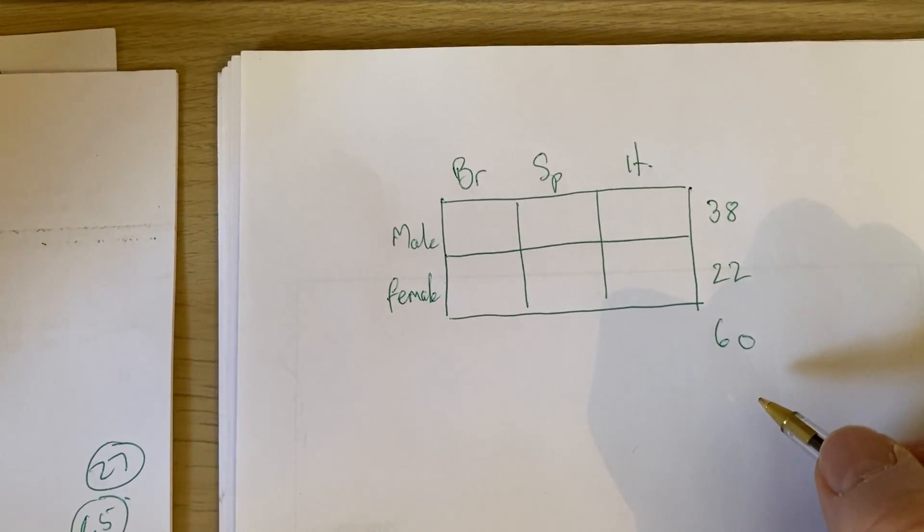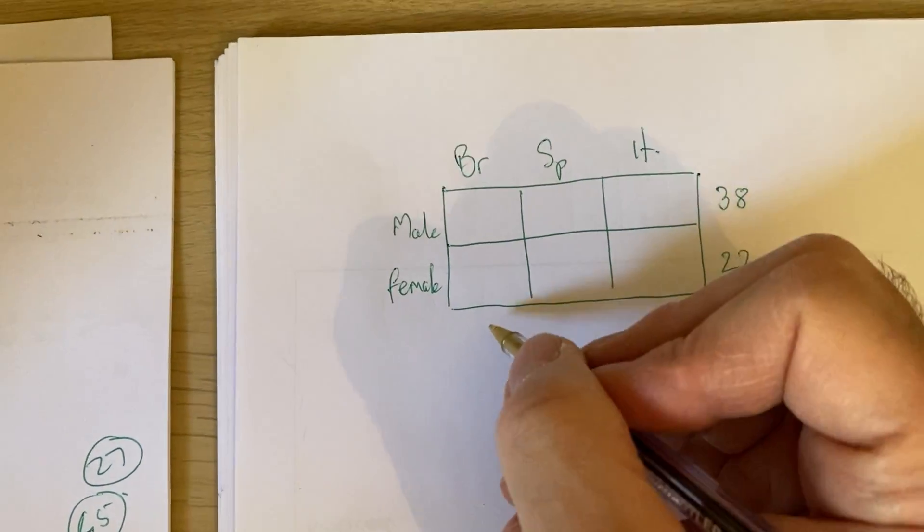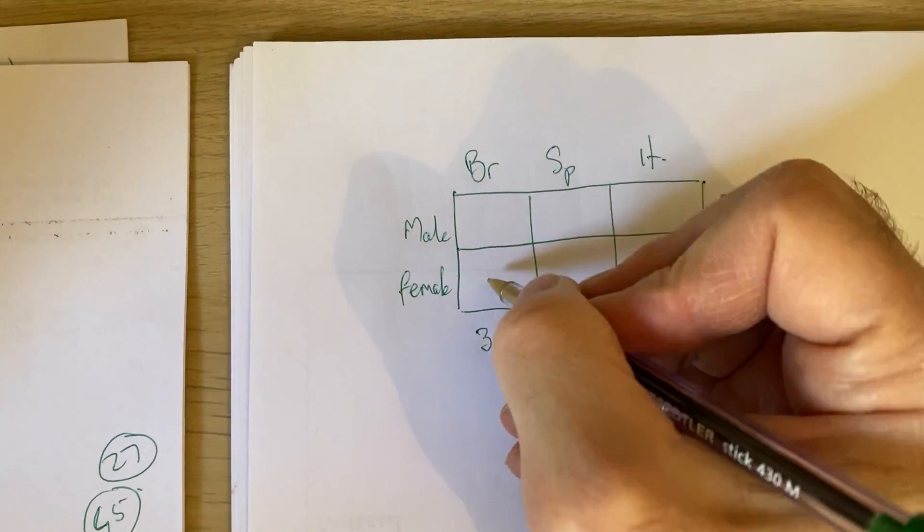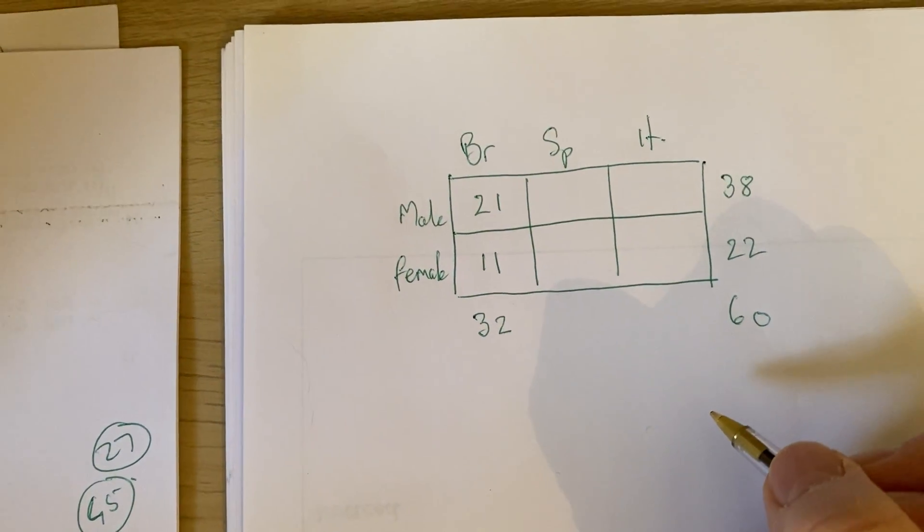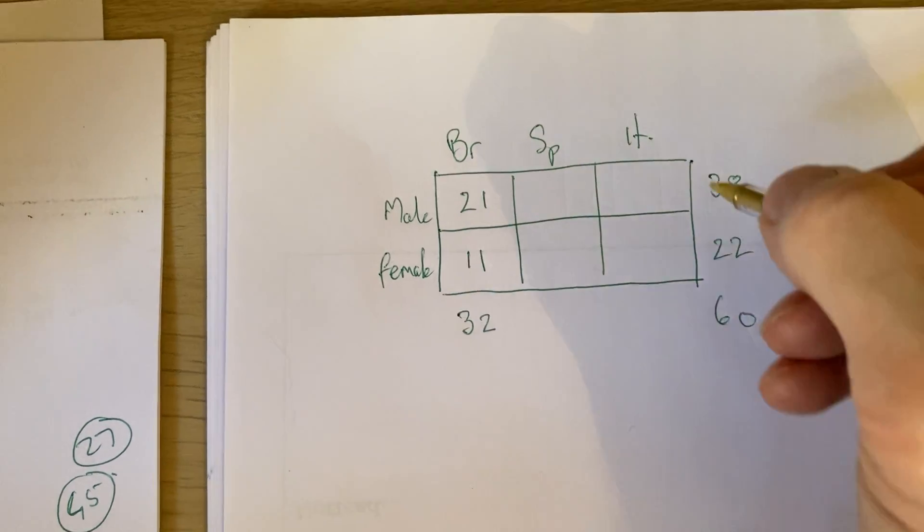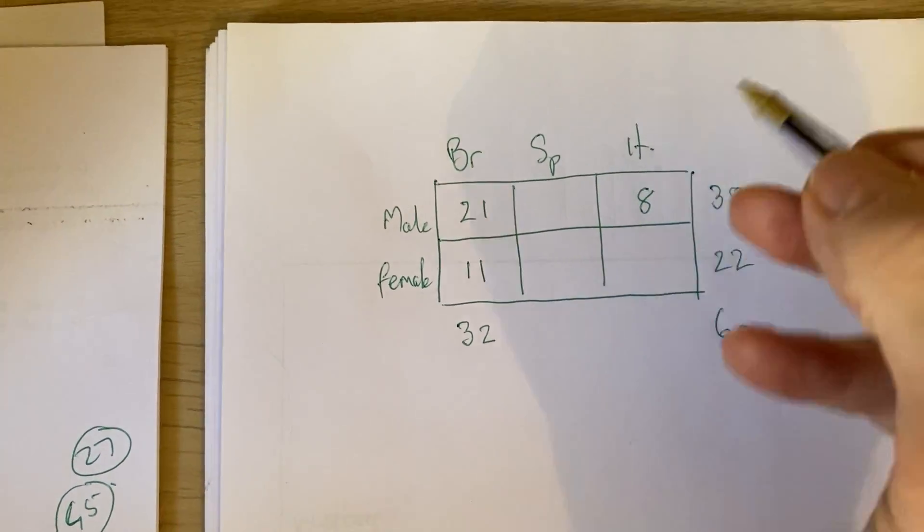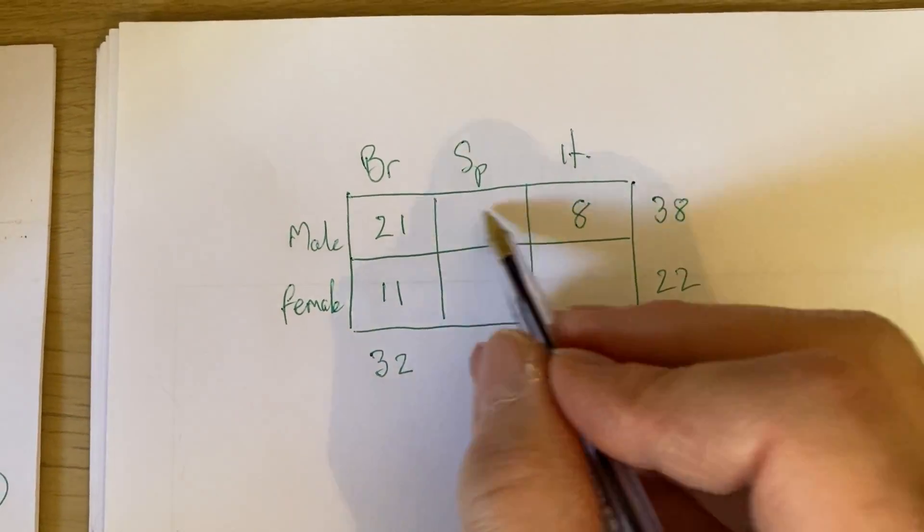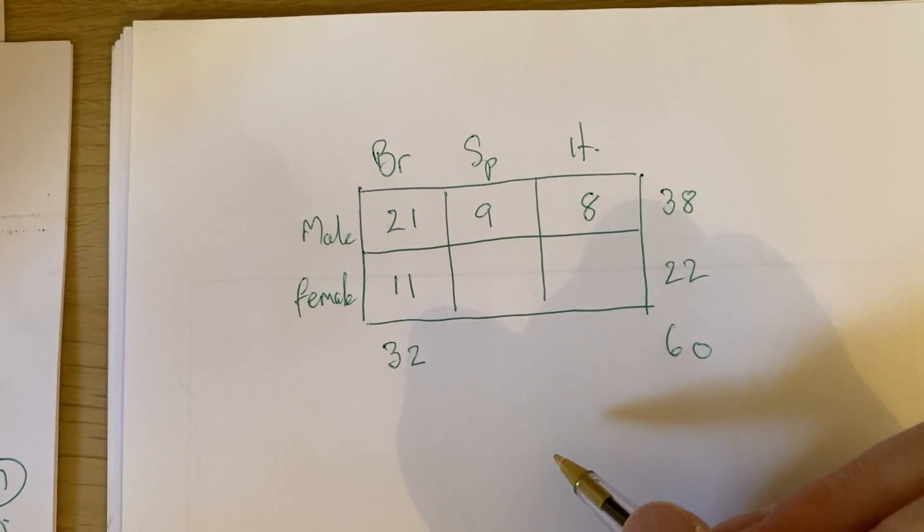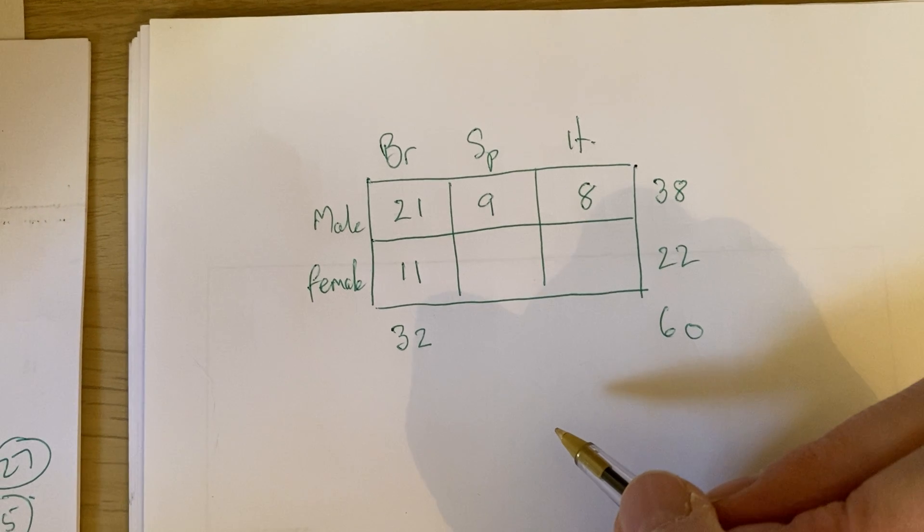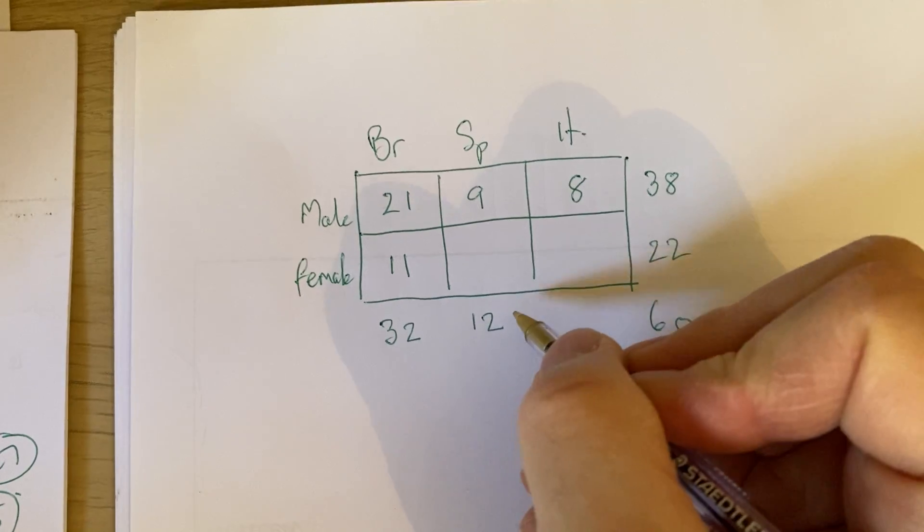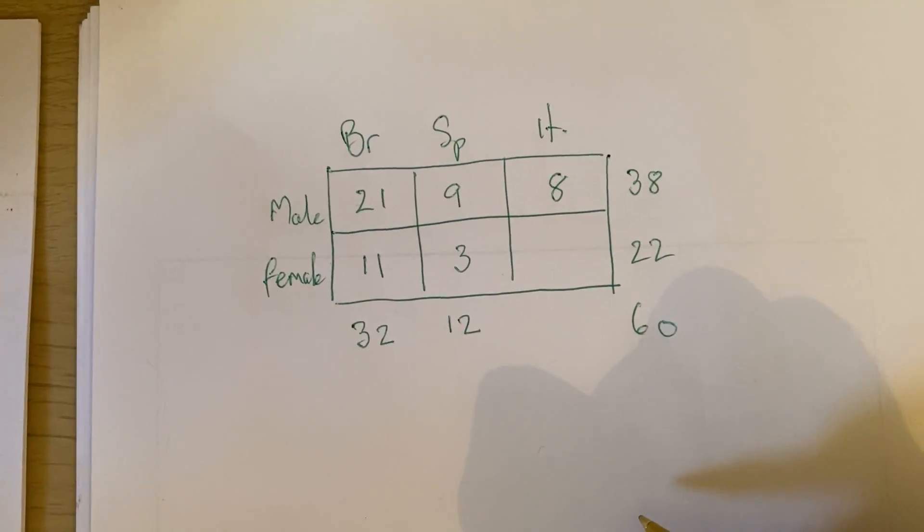11 of the 32 who said Britain, so therefore 32 said Britain there. 11 were female. So that means 21 must have been male. And then it says 8 males said Italy. So if 8 males said Italy, I can work out here, that must be 30. So that must be 9 that goes there. And what else did they say? One of the females is chosen. 12 people said Spain. Okay, so if 12 people said Spain, that must be 3 females chose Spain.